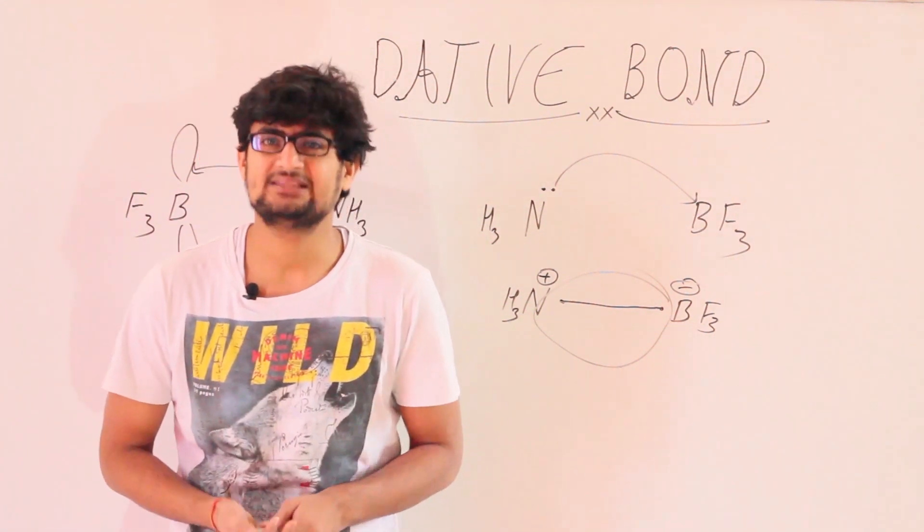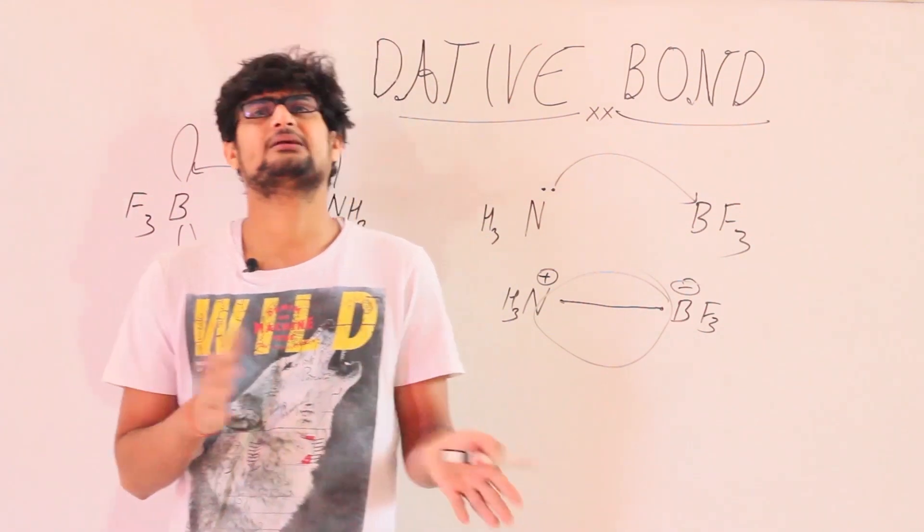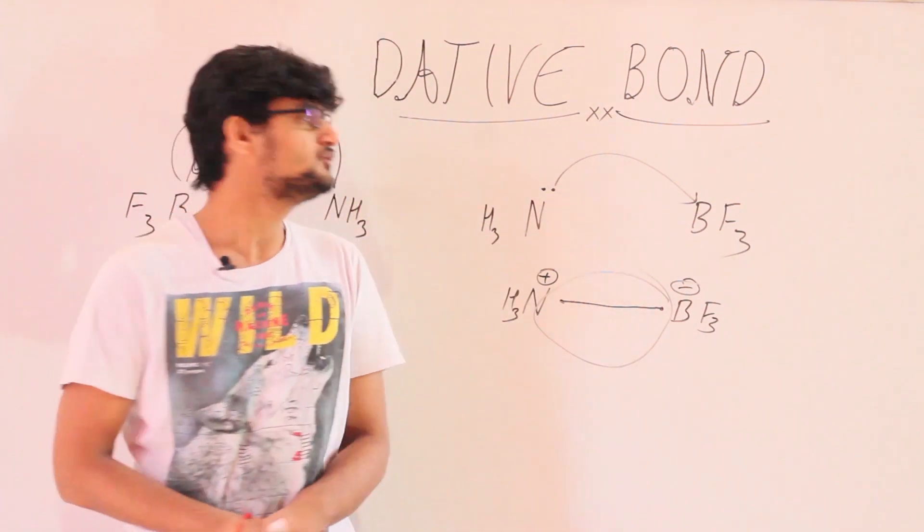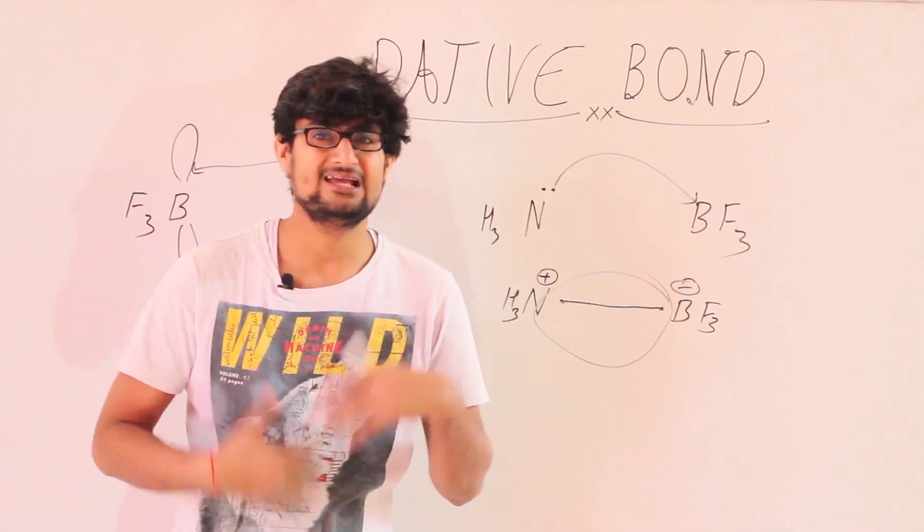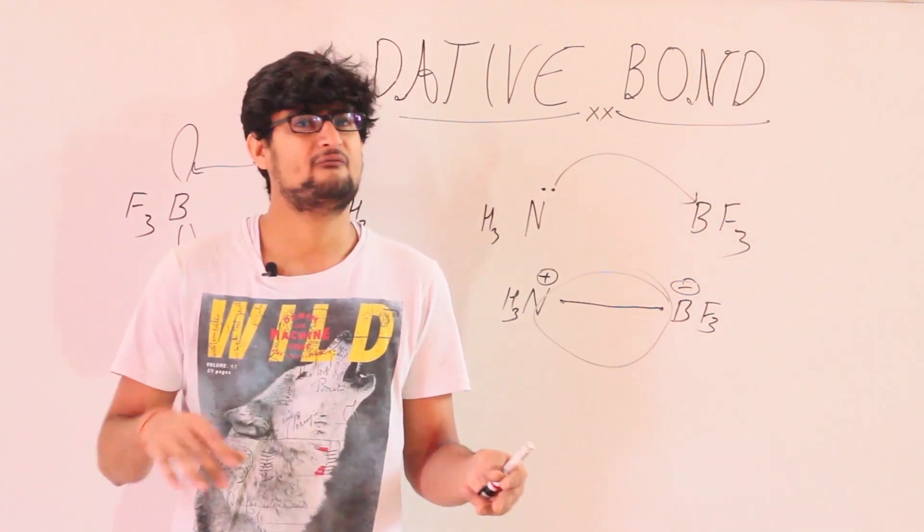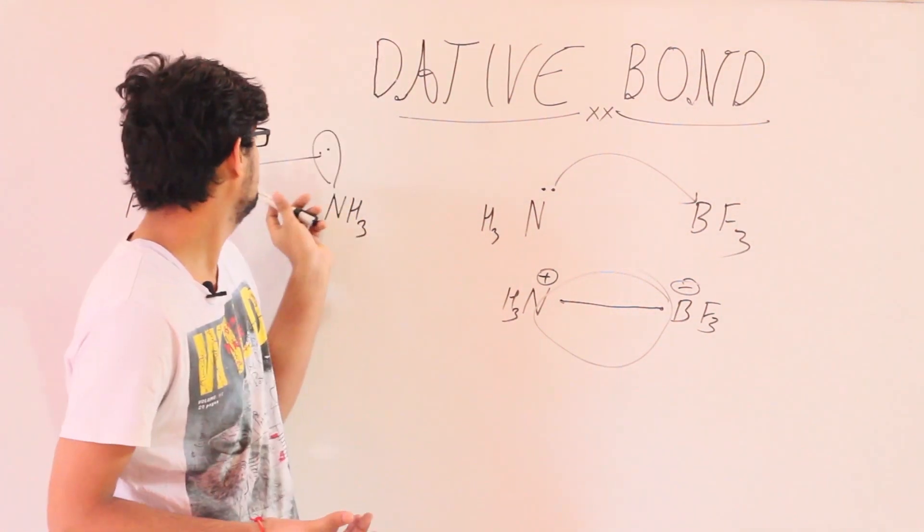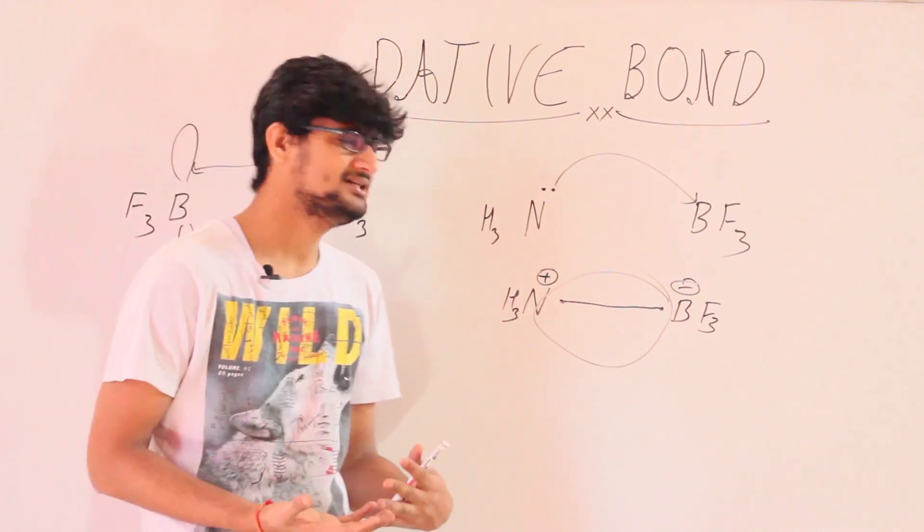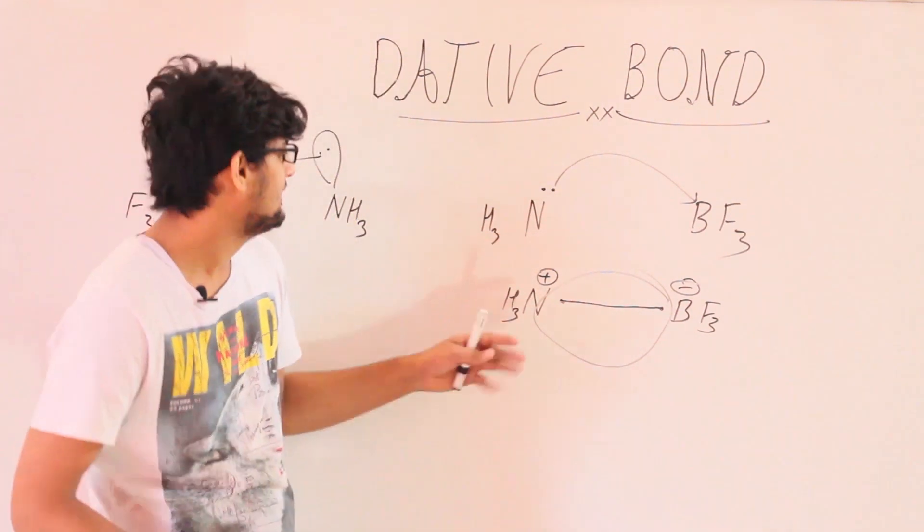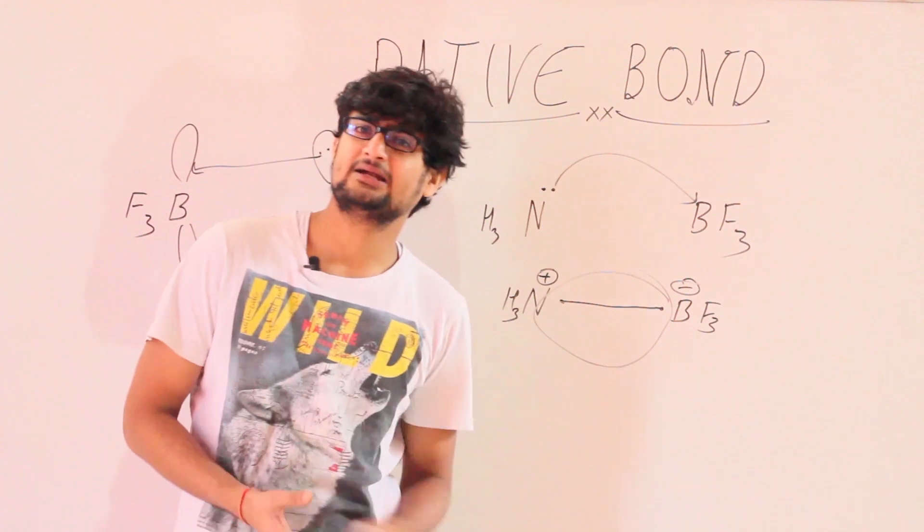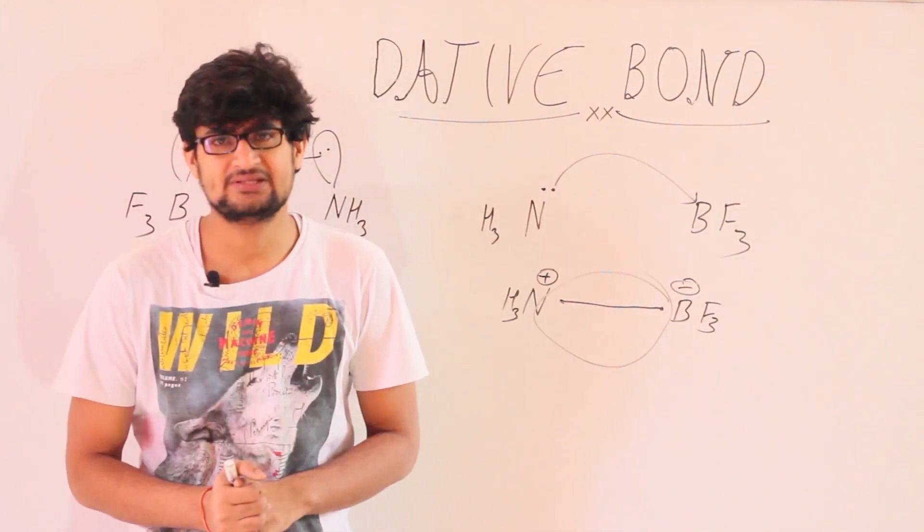The bond strength and bond length will be rather similar, so they cannot be differentiated. And if they cannot be differentiated, why should we use a different notation? So we can just show a positive charge and a negative charge to show this kind of bonding.